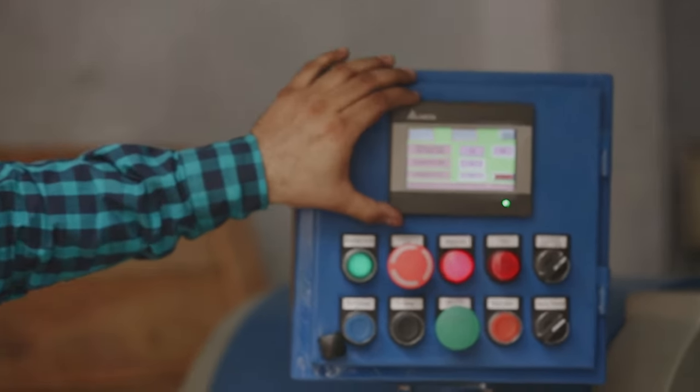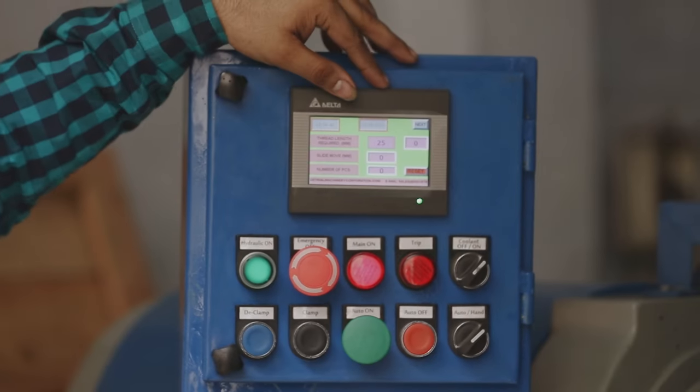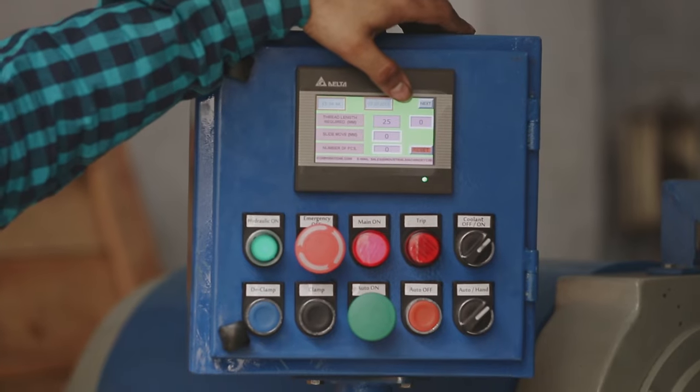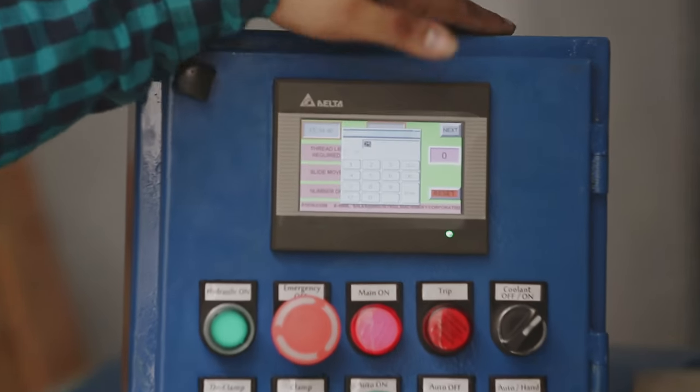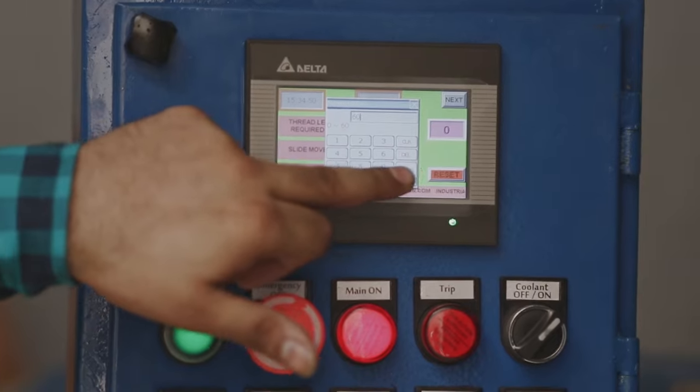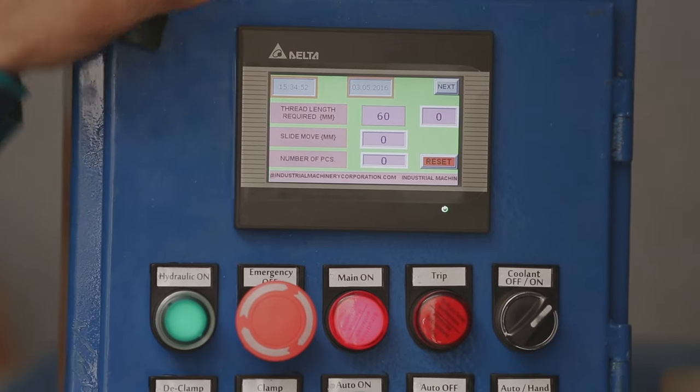Here you can see the automation setting of our machine. This is the main screen when you start the machine. Here you can see the thread length required option - you can put the thread length which you require, the maximum...